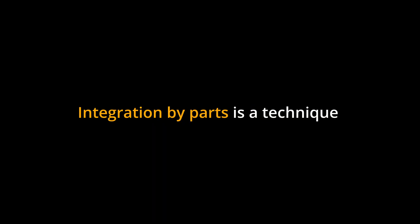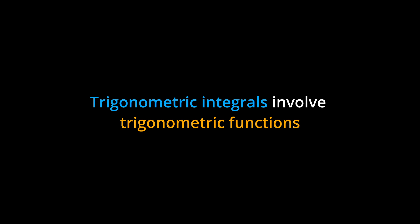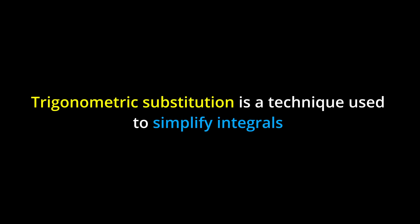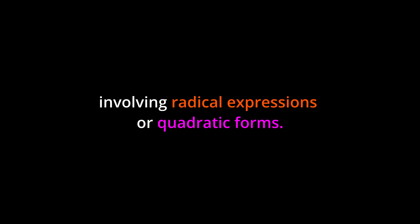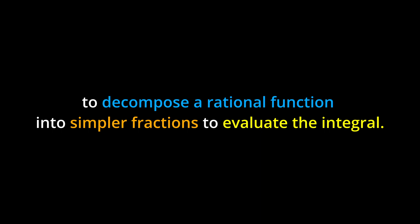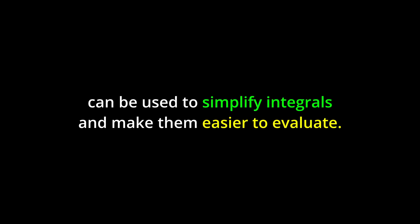Key Points. Integration by parts is a technique that allows us to evaluate integrals by choosing appropriate functions for U and DV. Trigonometric integrals involve trigonometric functions and can be simplified using trigonometric identities. Trigonometric substitution is a technique used to simplify integrals involving radical expressions or quadratic forms. Partial fractions is a method used to decompose a rational function into simpler fractions to evaluate the integral. Other strategies, such as substitution and completing the square, can be used to simplify integrals and make them easier to evaluate.